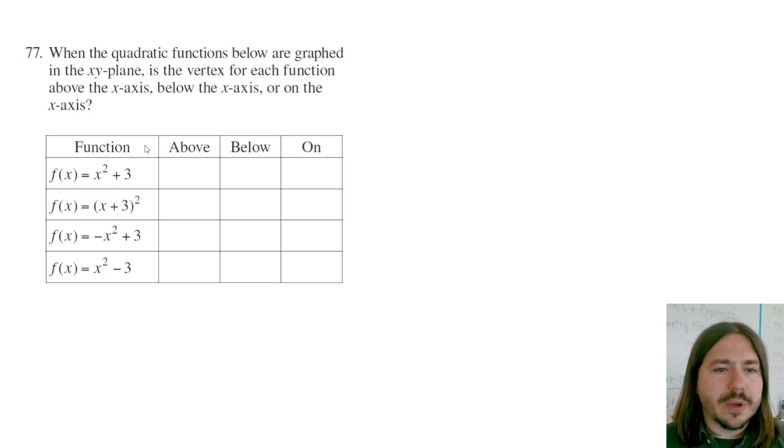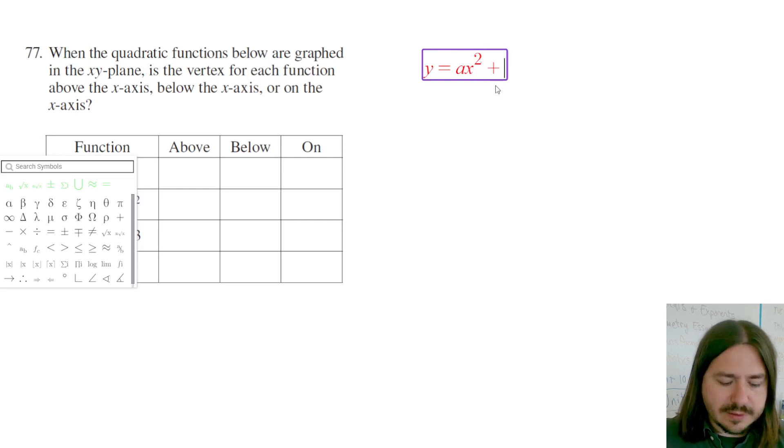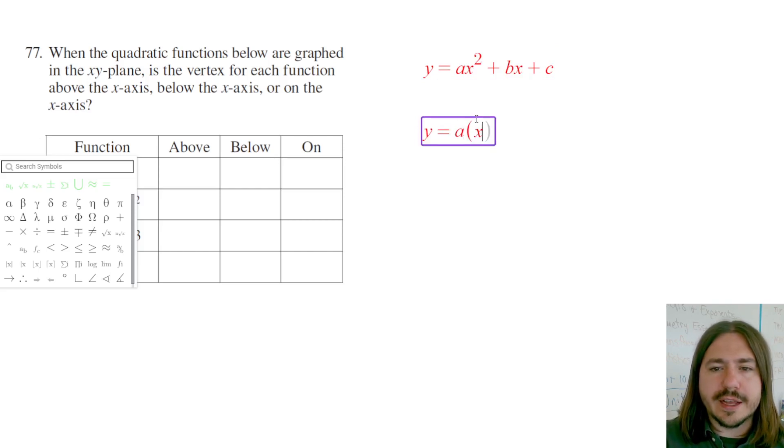So what we need to do is basically identify where the vertex is in each of these equations. Now when you're dealing with quadratic equations, they're either going to be written in standard form, which is ax squared plus bx plus c, or they might be written in vertex form, which is a times x minus h squared plus k.